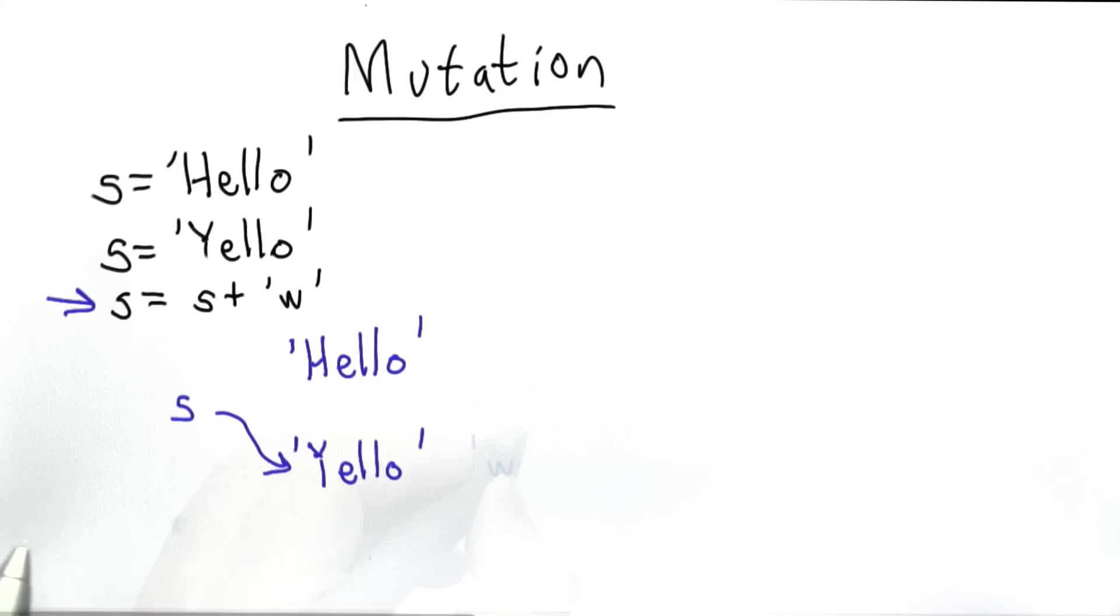So when we execute the third statement, first a new string with a value w is created. Then when we do the concatenation, it doesn't modify the previous string that we created. It creates a whole new string, which will have the value yellow spelled with a w, and then the assignment changes what s refers to to refer to the new string. So now let's see what we can do with lists.